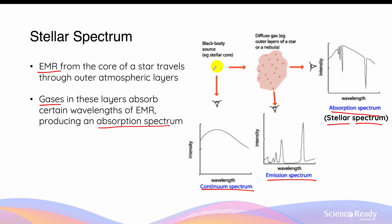Normally the radiation produced from stars, if it doesn't pass through any gases, will be continuous because there are no elements absorbing any energy from it. The elements in the form of gases in the outer layers of the star will produce specific emission spectra if the electrons were excited. This diagram shows the relationship between the three types of spectra, and the position of the absorption lines in the absorption spectrum are identical to the emission lines of these elements.